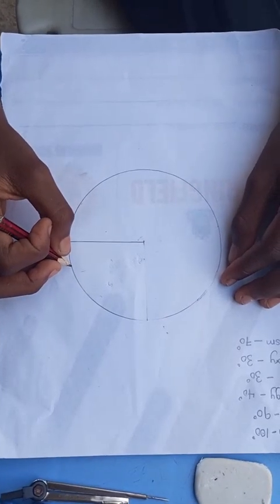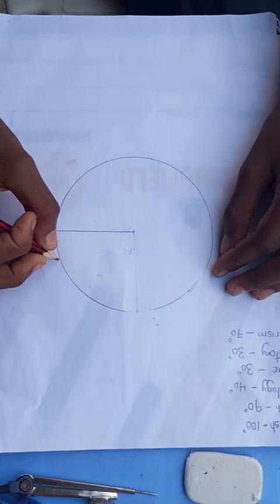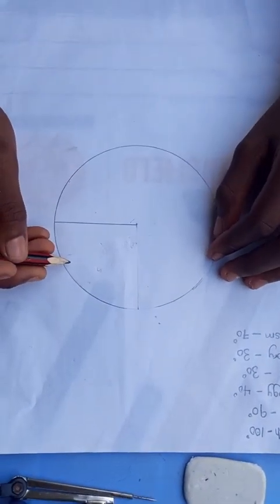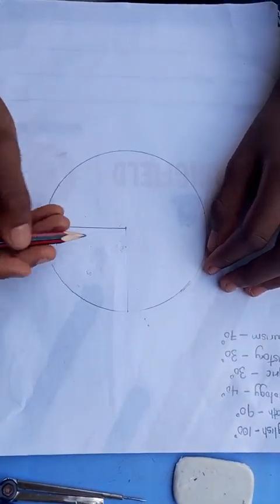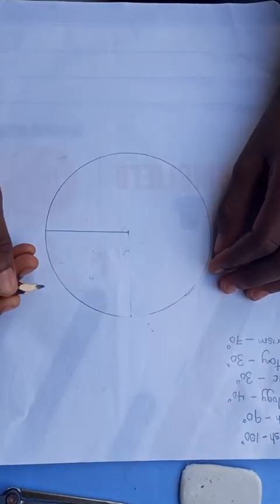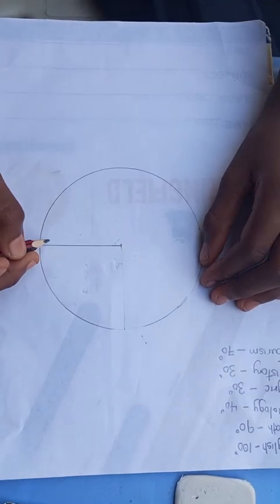Now let's go to the pictorial representation of the data. For us to determine each of the sectoral angle that we are given from the data, we draw a circle like this, which is 360 degrees. Then from the center of the circle, we draw a radius line.